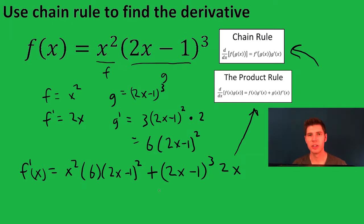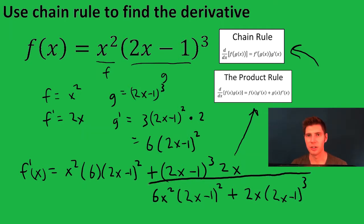So this can be cleaned up a little bit. We can rewrite this probably as 6x squared times 2x minus 1 squared, plus 2x times 2x minus 1 cubed. Pretty much the same answer, but it looks a little cleaner. And that is the answer to the question.